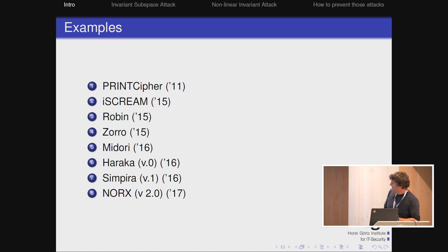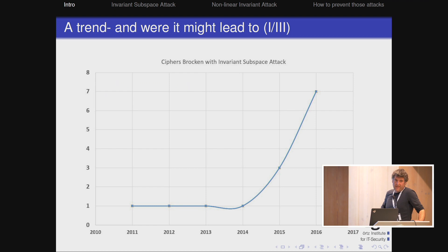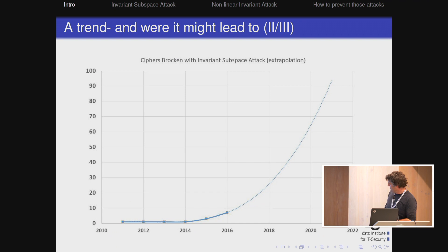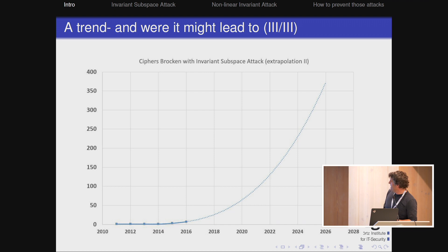Just to see a trend, I asked Excel to plot this. Something tweaked and was fixed again for a short time. I also looked at how this is going to continue — in Excel you can easily ask for the prediction. So there's 2020, we're almost there. The prediction goes up significantly, and by 2026 we'd have 370 ciphers being broken with this. So actually invariant attacks are more dangerous than the quantum threat — that's the real threat.